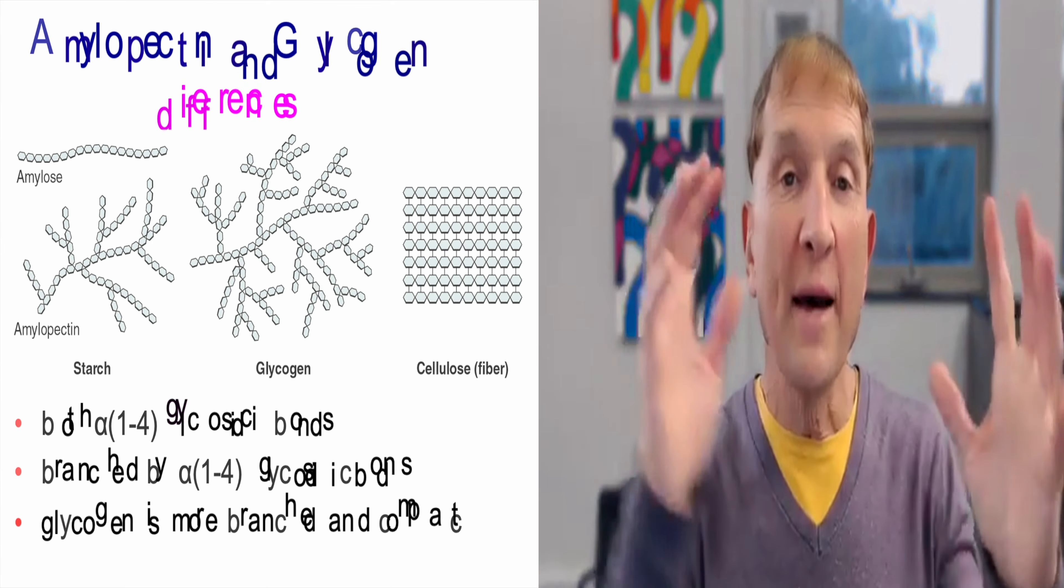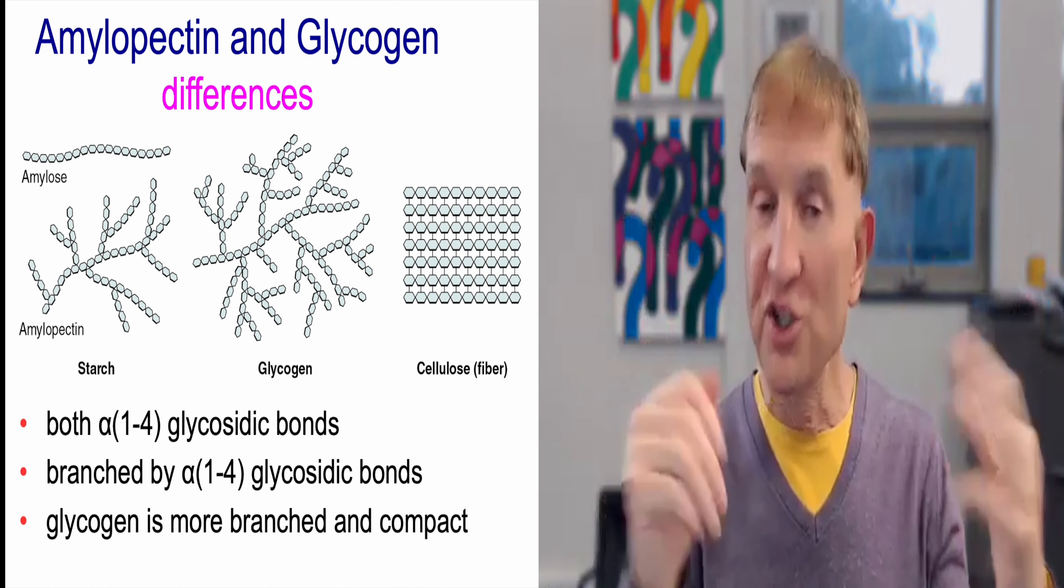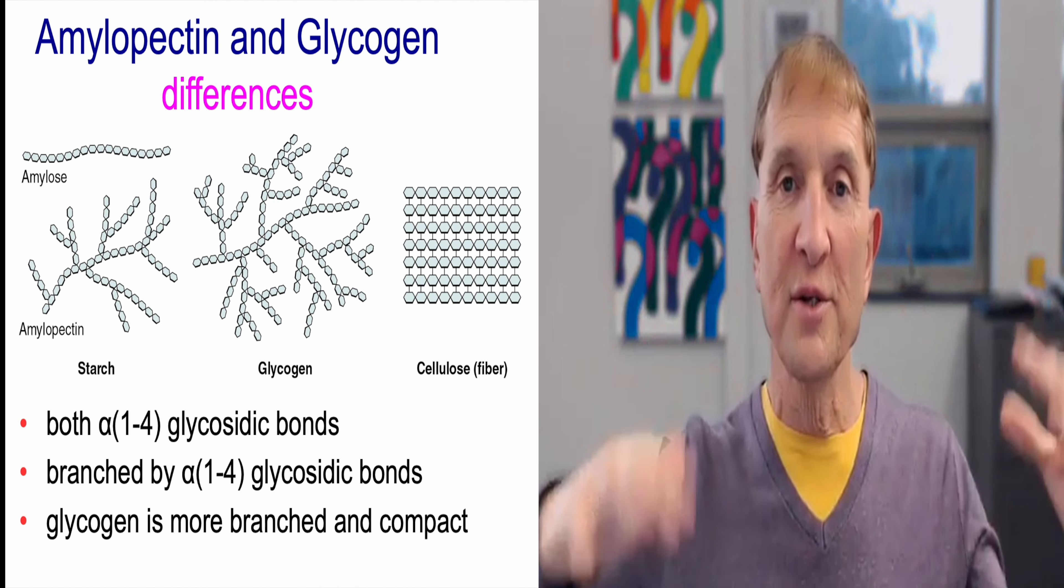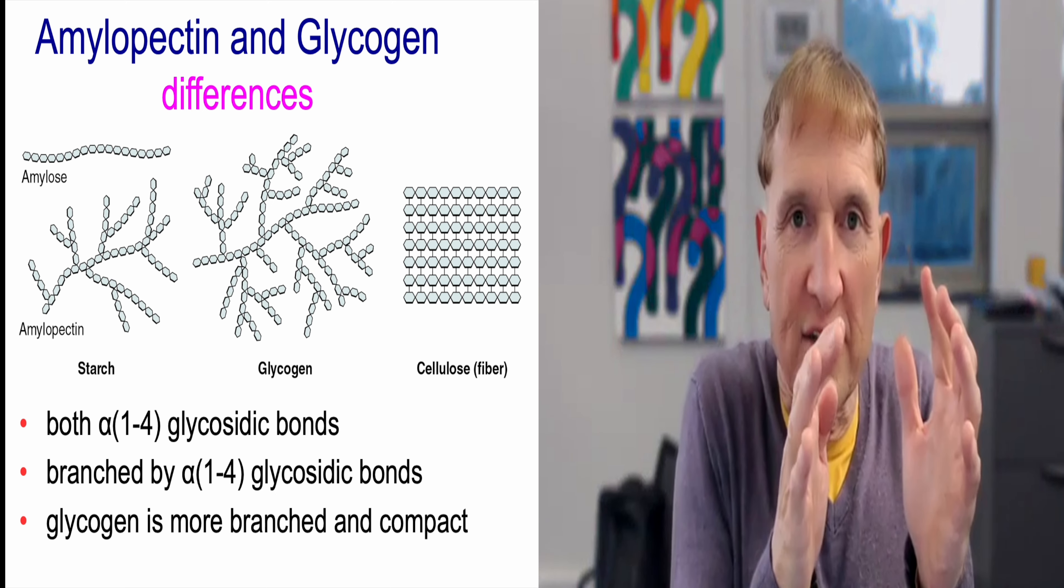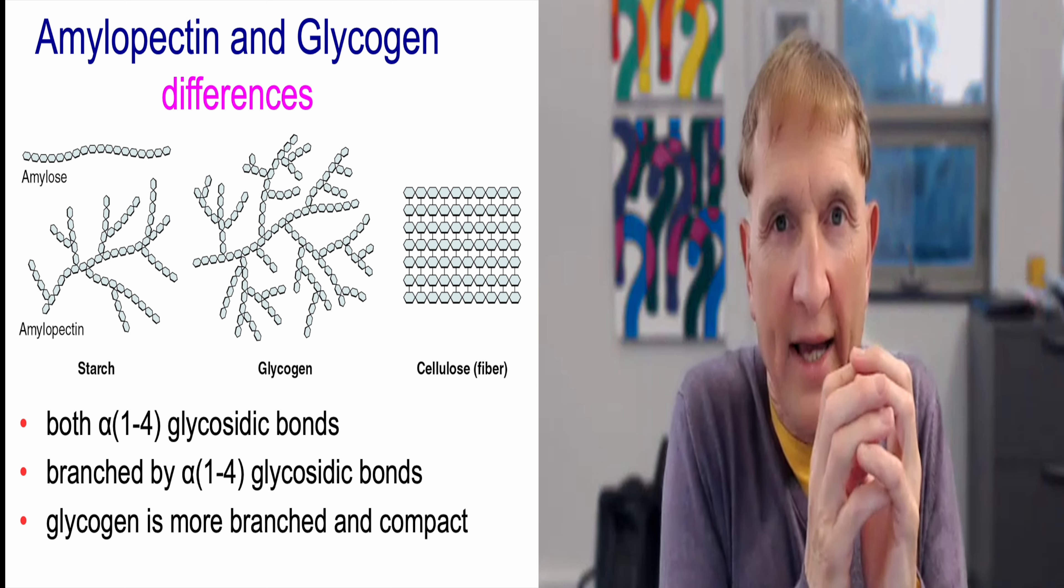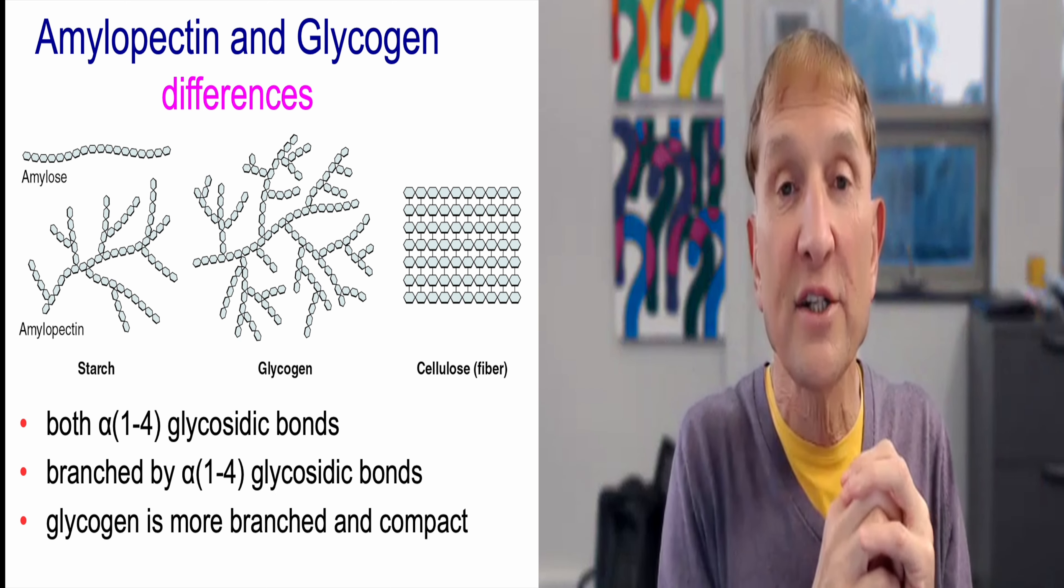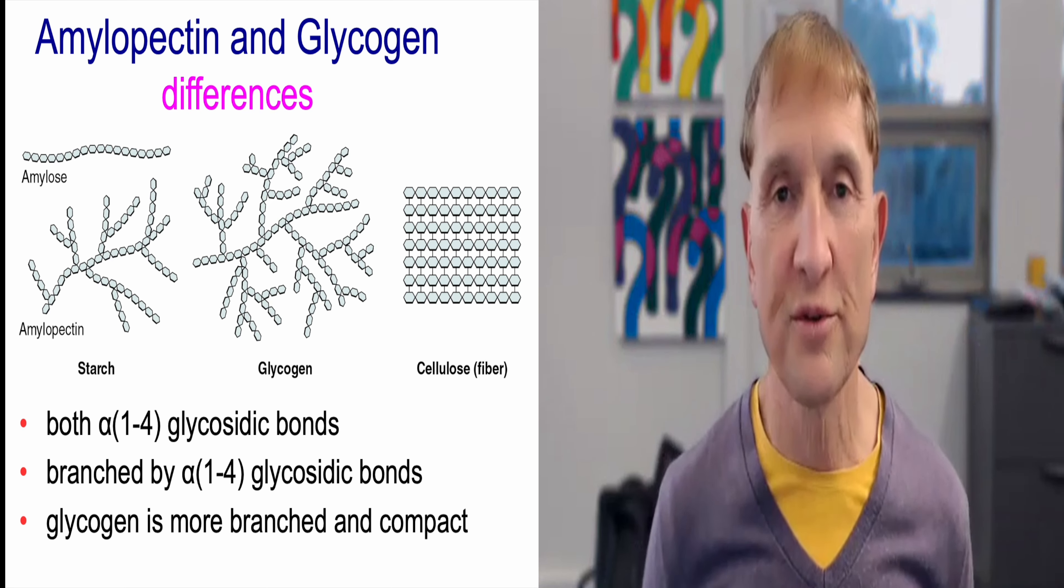So the difference between amylopectin and glycogen then is glycogen is branched at shorter intervals, it's more compact. It's a tighter form of energy storage that we as mammals use.